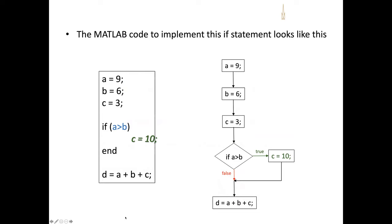We've outlined how to implement the if statement. When A equals 9, B equals 6, and C equals 3, with A being greater than B, C is assigned the value 10. Our if statement then ends and we do our new computation.